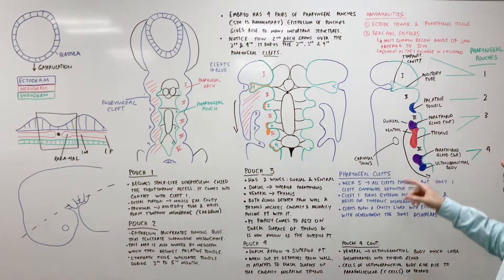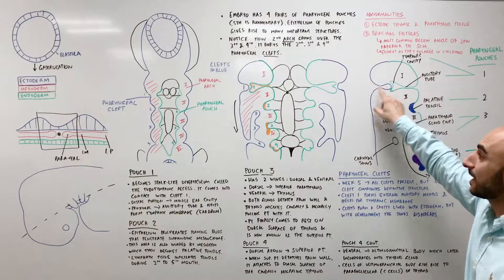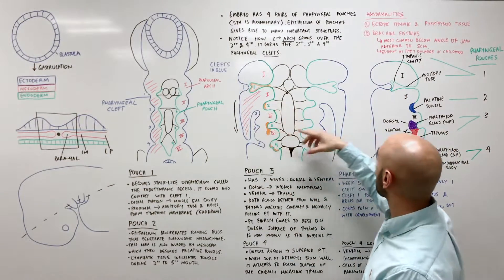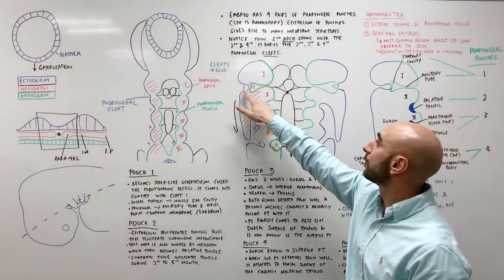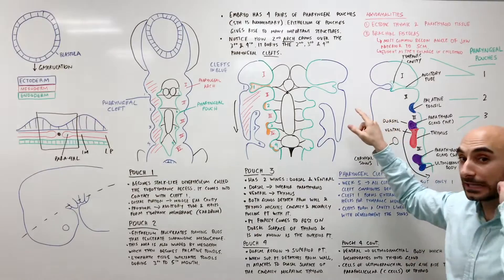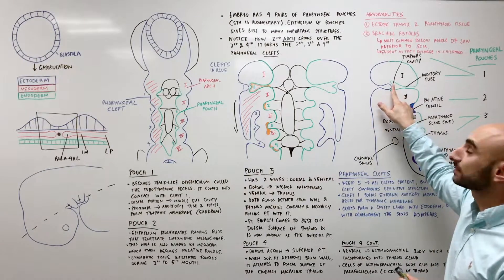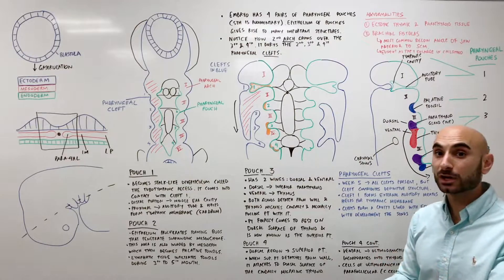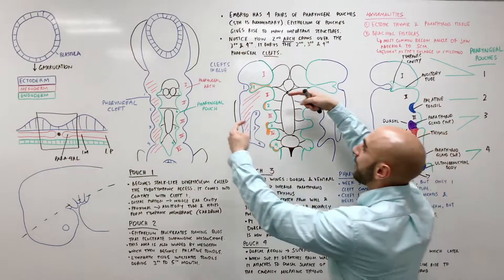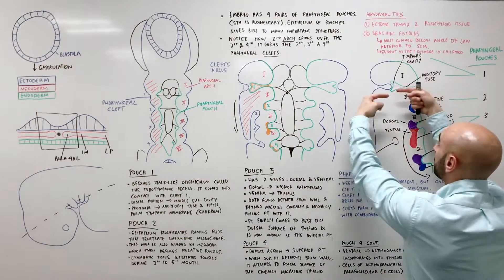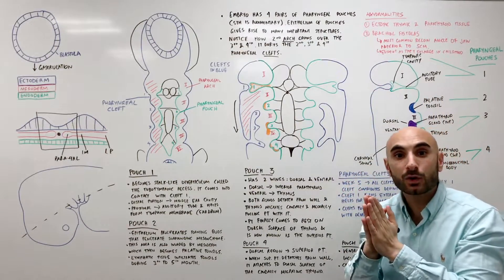And what it contributes to is that it becomes, if you notice here, how the 2nd, 3rd and 4th are gone and you only have one. It becomes the external auditory canal, E tube and the outer bit of the tympanic membrane. So, you remember how we spoke about how the pharyngeal pouch joins the pharyngeal cleft? Where it joins, that's your ear drum. That's the tympanic membrane.